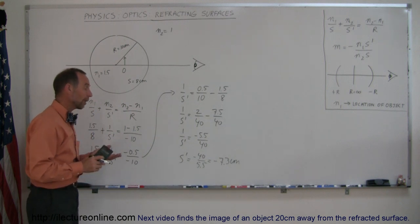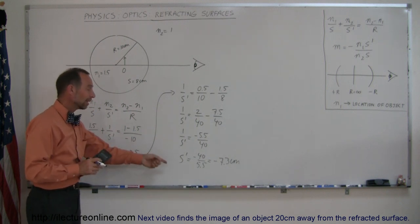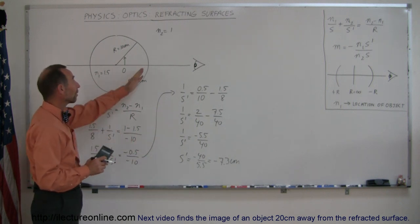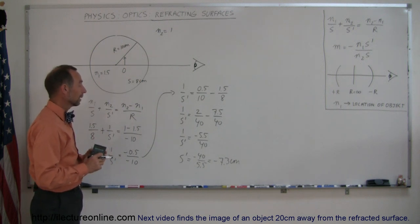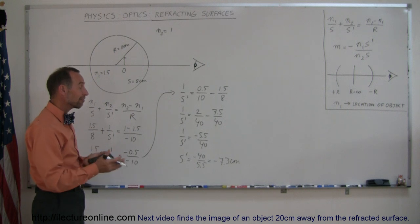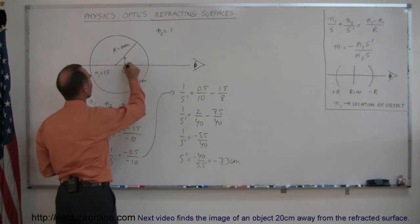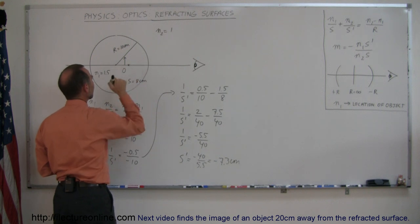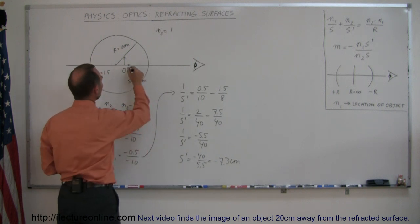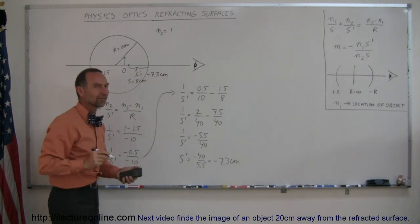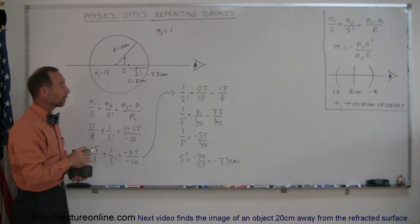What does that mean? Well, for one thing, we know that the image is 7.3 centimeters away from the edge, from the boundary, from the surface, and it's negative, that means it's in front on the same side as the object. So the image will be just right before the object, right there, 7.3 centimeters away. So here we have s prime equals minus 7.3 centimeters, that puts it on the same side as the object, therefore it's a virtual image.